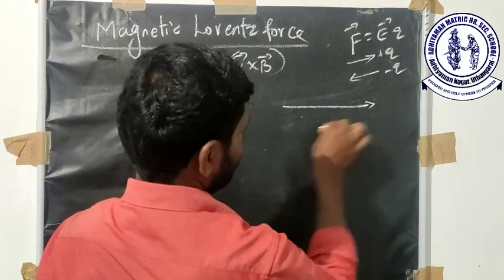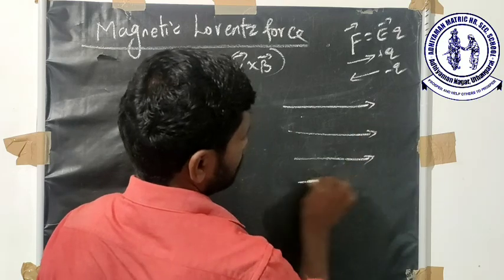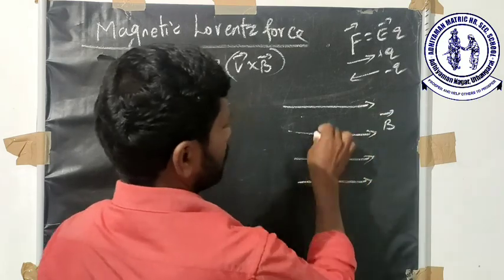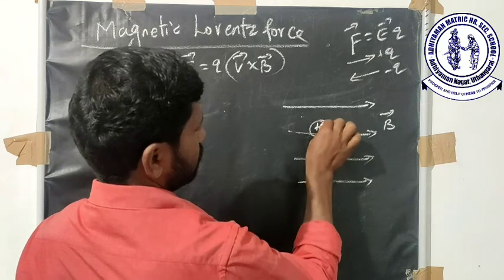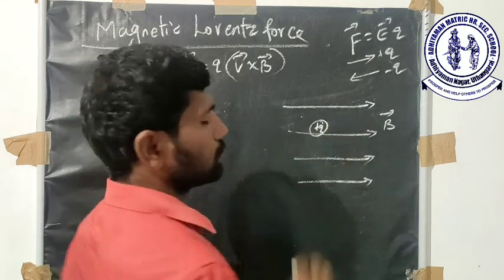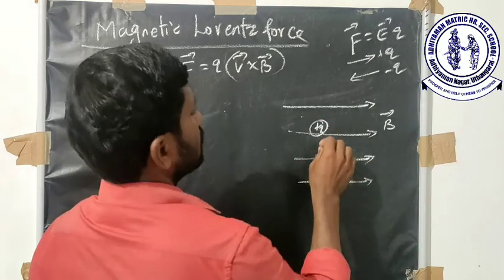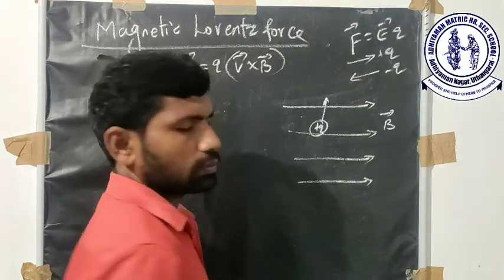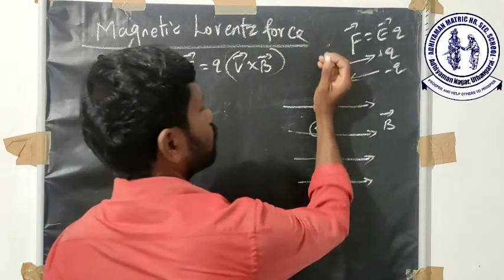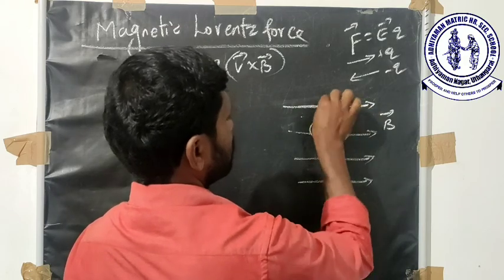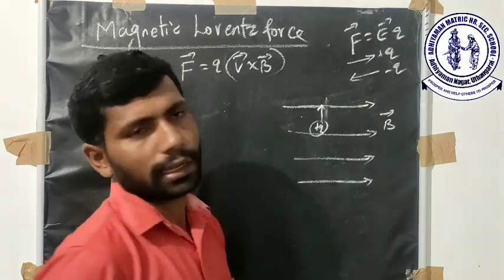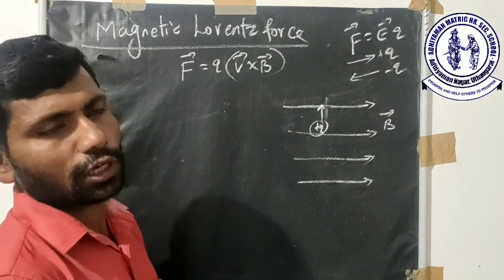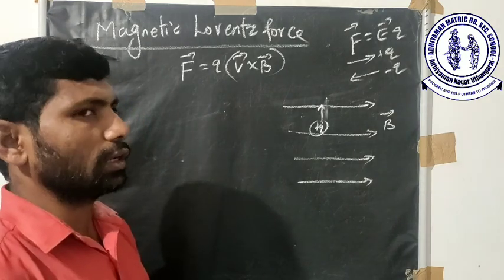For example, consider a uniform magnetic field. Here is a positive charge, plus Q. This charge is moving upward along the axis. The charge is moving — if the direction changes, the charge will produce a corresponding response.